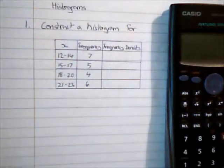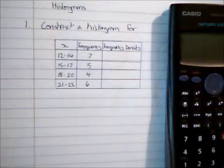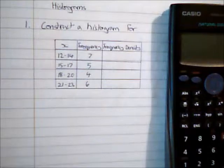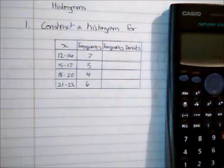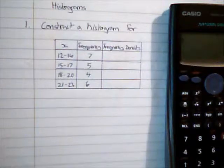In this video we're going to consider how to construct a histogram. A histogram is a type of chart that you've come across at GCSE level, and for GCSE we said that the area of each bar in the histogram is equal to the frequency.